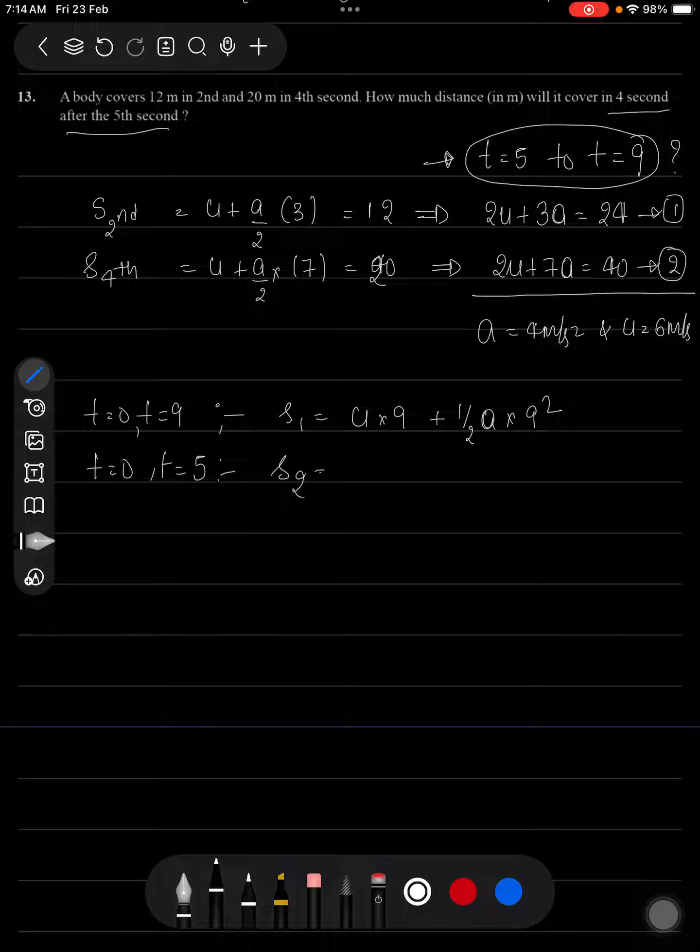And in the time interval t equals 0 to t equals 5 the distance traveled will be u into 5 plus half a into 5 square.